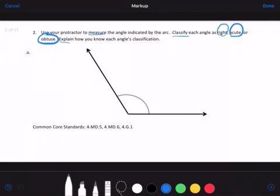And problem 2 has three parts. There's an A, a B, and a C. So I don't know how to get a protractor on here to show you how to measure.